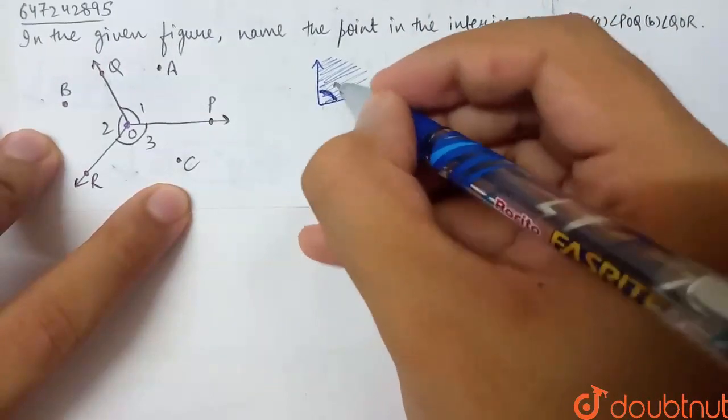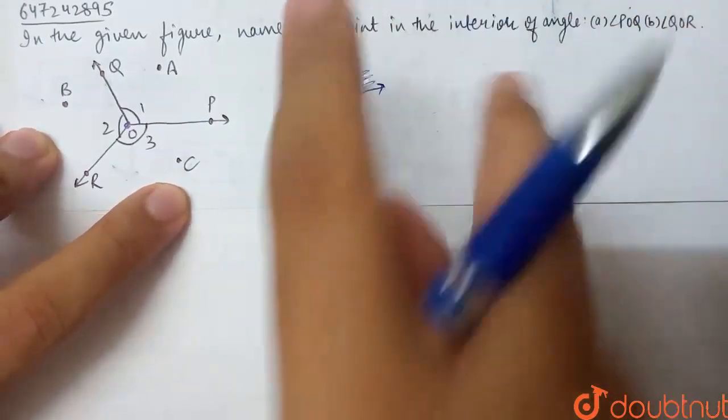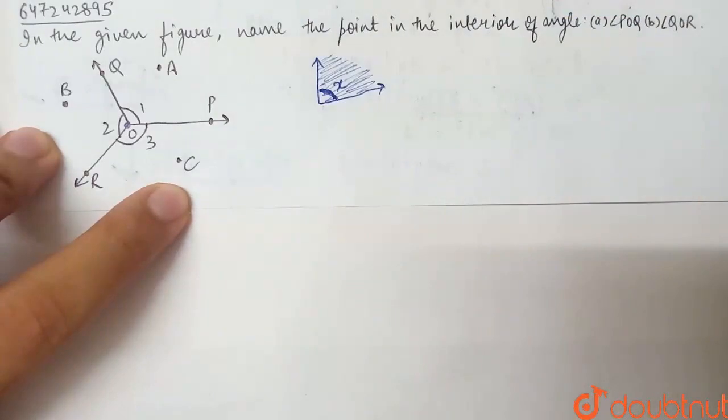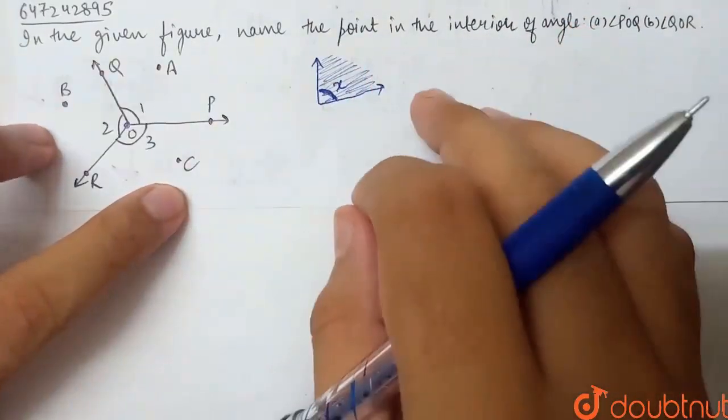So if I have this angle x, the interior portion is the x angle between the two rays. Hence, what will I tell you? Name the point in the interior of angle POQ.